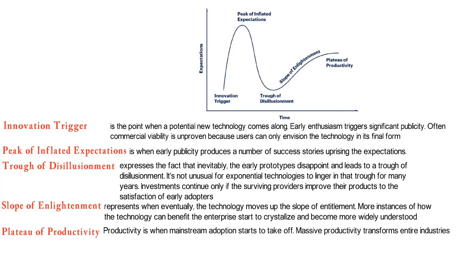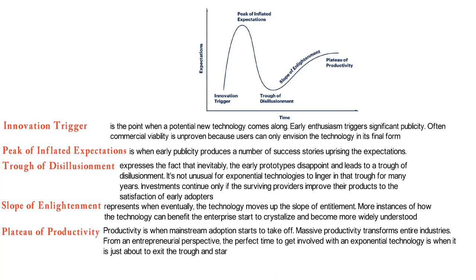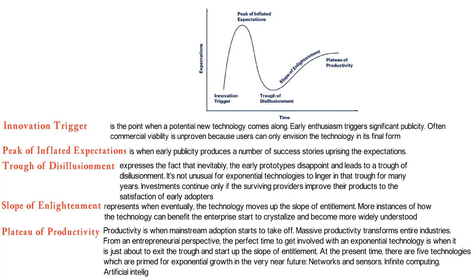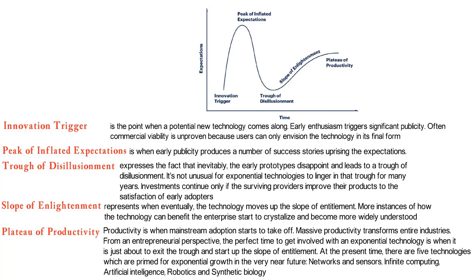From an entrepreneurial perspective, the perfect time to get involved with an exponential technology is when it is just about to exit the trough and start up the slope of entitlement. At the present time, there are five technologies which are primed for exponential growth in the near future: Networks and sensors, infinite computing, artificial intelligence, robotics, and synthetic biology.